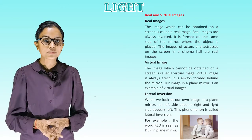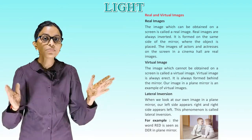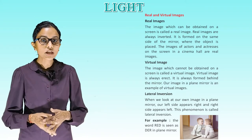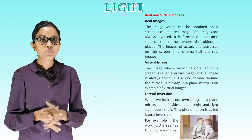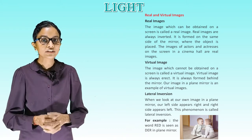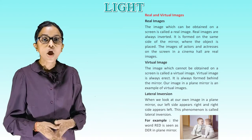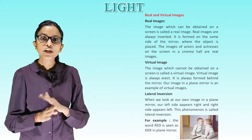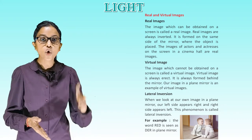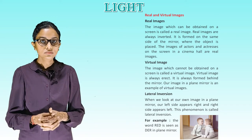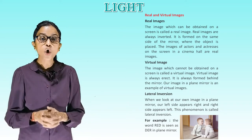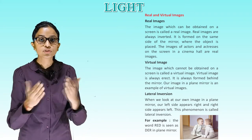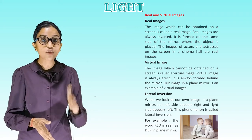Real and virtual images. Real image: the image which can be obtained on a screen is called a real image. Virtual image: the image which cannot be obtained on a screen is called a virtual image. A virtual image is always erect and is always formed behind the mirror. Our image in a plane mirror is an example of a virtual image.